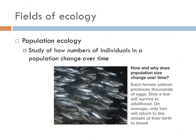Population ecology is a subfield of ecology that deals with the dynamics of species populations and how these populations interact with their environment. Specifically, it's the study of how the population size of a species living together in groups changes over time. A population ecologist studying salmon would look at the number of salmon within a stream and calculate their population change over time.